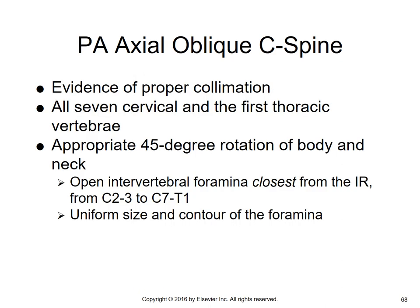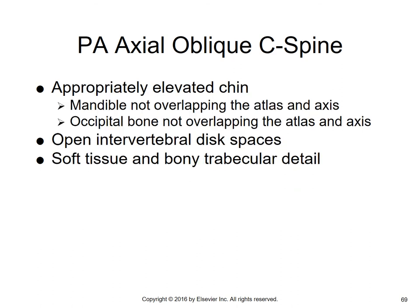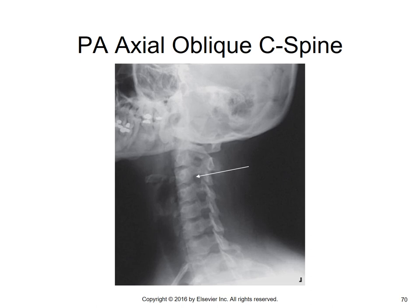For PA axial obliques: all seven cervical vertebrae again with 45-degree rotation. The key difference is the open intervertebral foramina are closest to the IR. So if you do an RAO, you see the foramina on the right side; if you do an LAO, you see the foramina on the left side. Vertebrae should be uniform, foramina contours equal. Elevated chin, mandible and occipital bone not overlapping atlas and axis. Open intervertebral disc spaces and bony trabecular detail are seen.